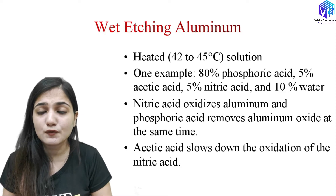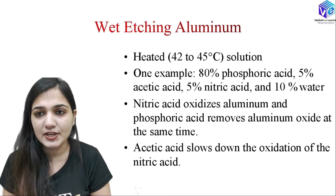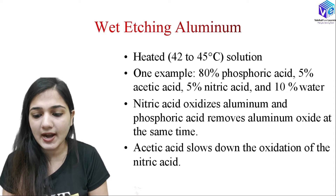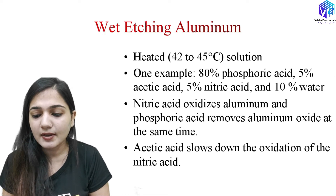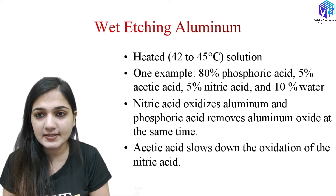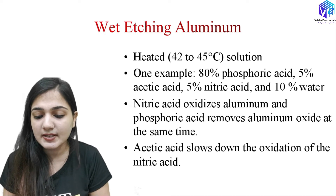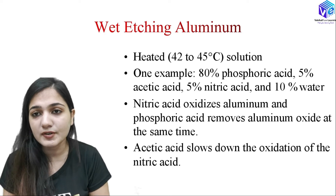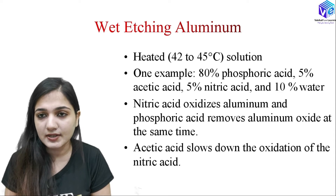Now coming to the wet etching of aluminium — this process will be used in the metallization process. Again I am using high temperature, but not very high: 42 to 45 degrees Celsius. In one example I can use 80% phosphoric acid, 5% acetic acid, 5% nitric acid, and 10% water. Nitric acid is a very good oxidizing agent and it oxidizes aluminium, while phosphoric acid, being a very strong acid, removes the aluminium oxide.